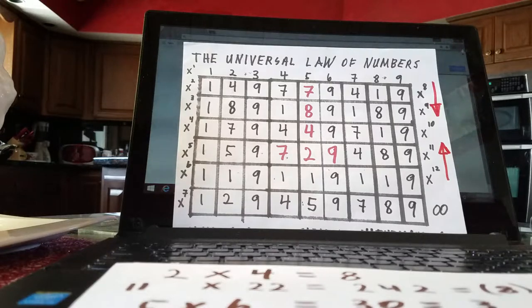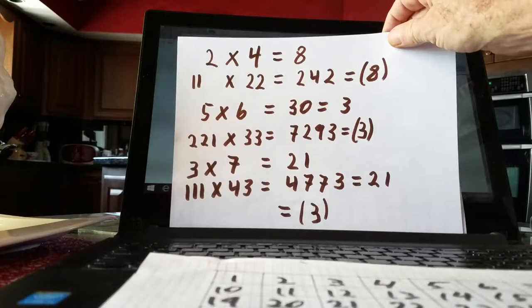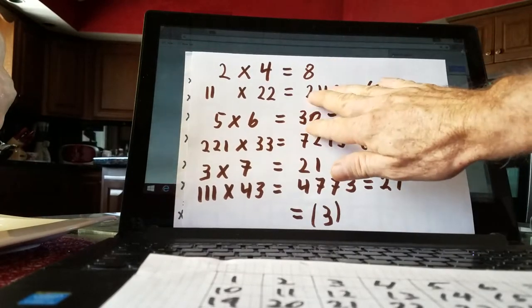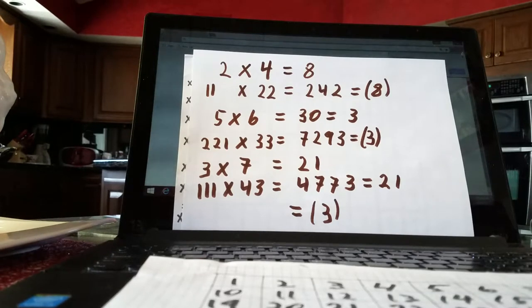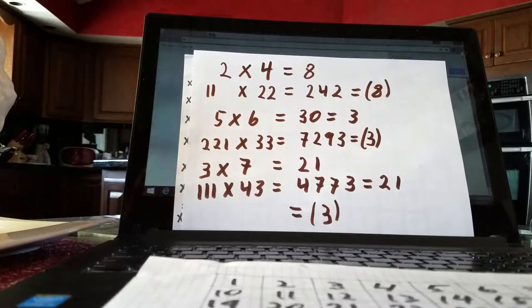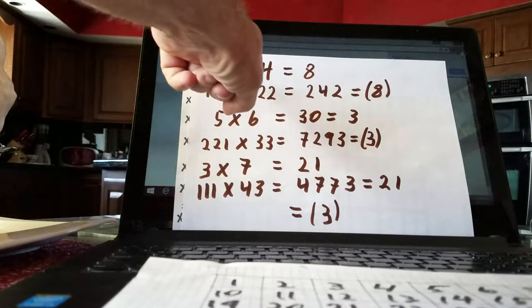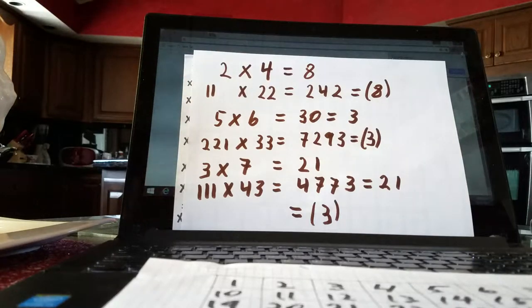I do some of this mathematics. Maybe some of you like it, maybe some of you don't. I'm sure some of you think it's not appropriate or conventional, but I just try and point out. So if 2 times 4 is 8, well 11 is a 2 and 22 is a 4, so 11 times 22 equals 242 and I do agree, and it's an 8.